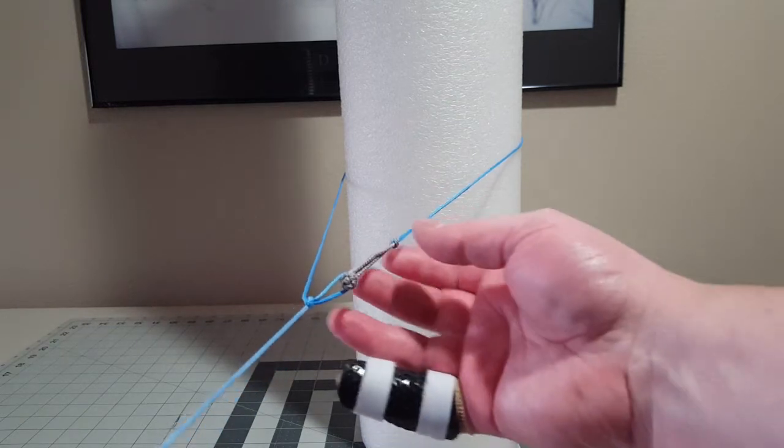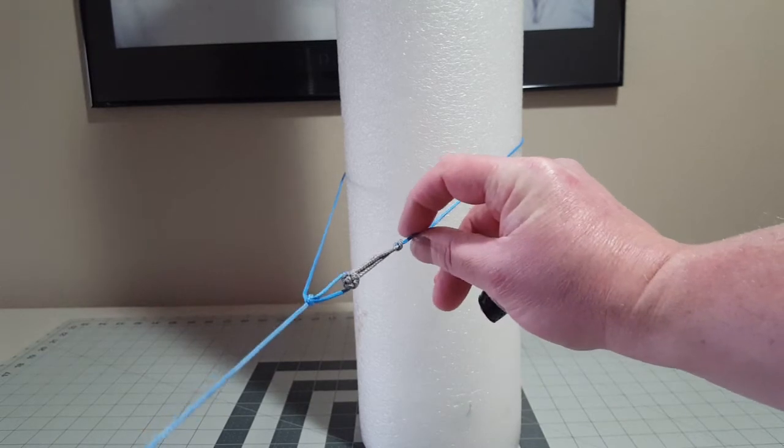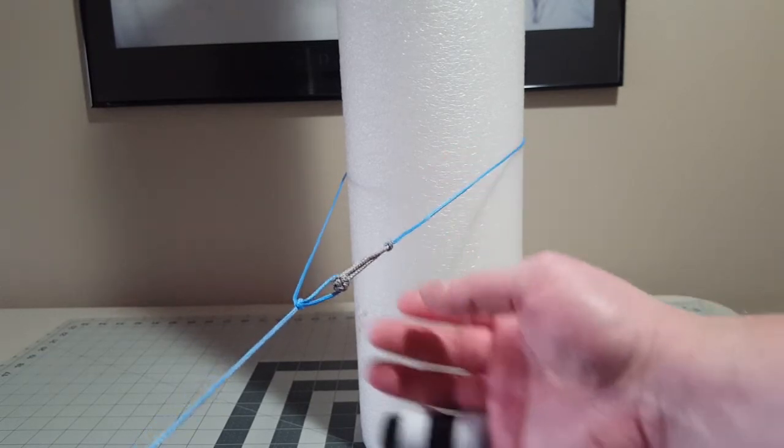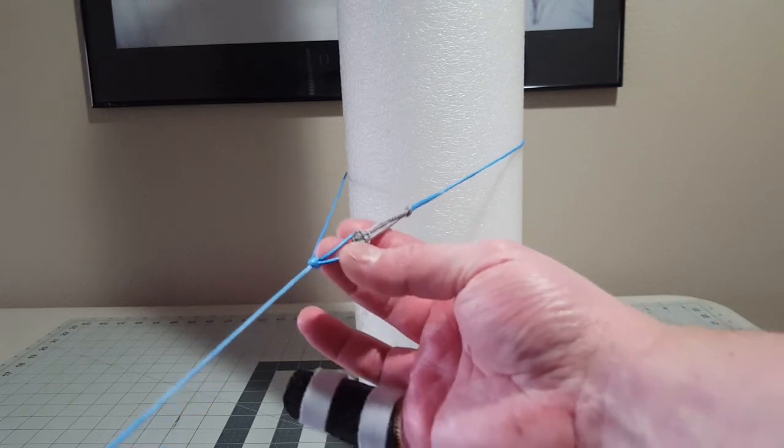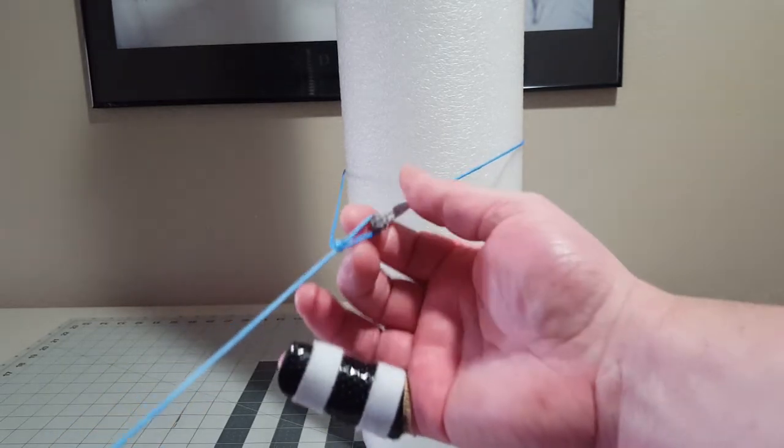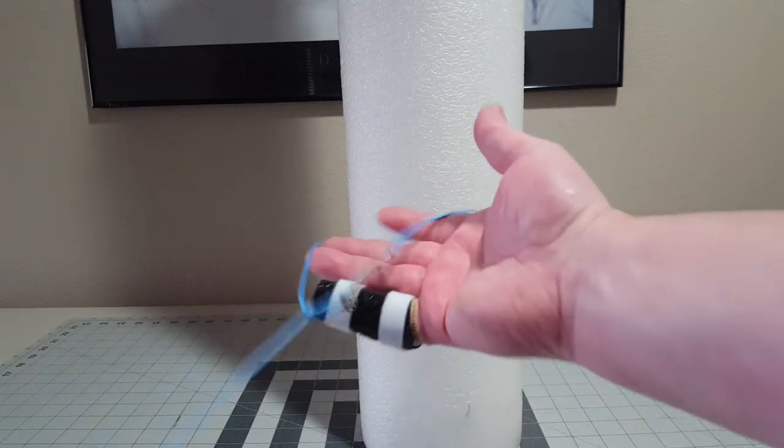This also works if you have on the end of this line a Dutch clip or a carabiner—it will work exactly the same way, you're just clipping into that loop. But with the button knot, the button knot just falls into the loop super easy, and it has nice static stability and dynamic stability.